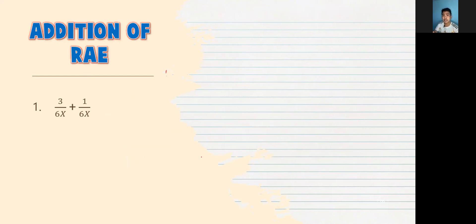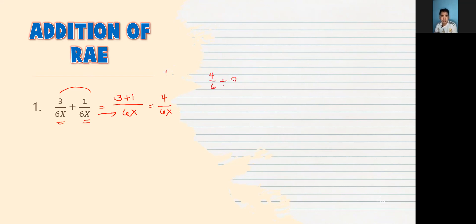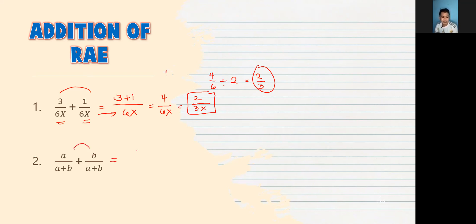Let's proceed to addition of RAE. Kapag same yung denominator, ang gagawin lang natin is to simply add the numerators: 3 plus 1 over the common denominator 6X. We have 4 over 6X. Simplify: 4 over 6 are both divisible by 2, so magiging 2 over 3. The final answer is 2 over 3X. For question number 2: A over A plus B plus B over A plus B — add A plus B, copy the common denominator. A plus B over A plus B — cancel. The answer is 1.